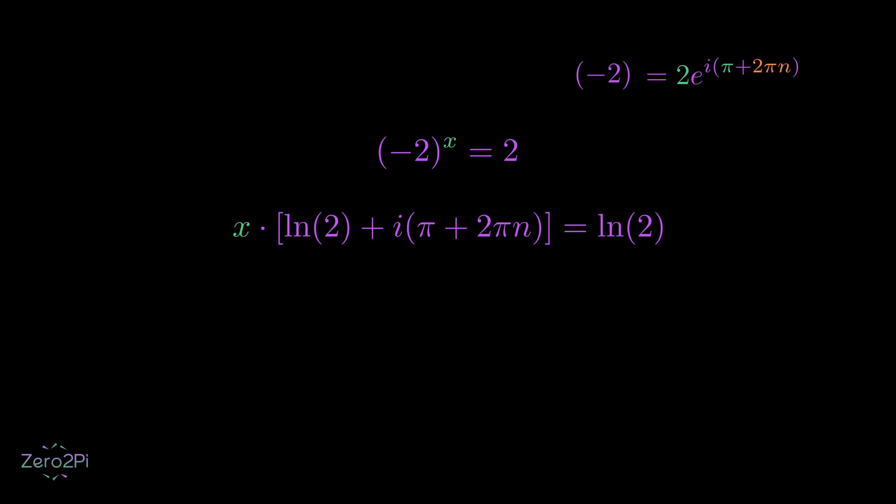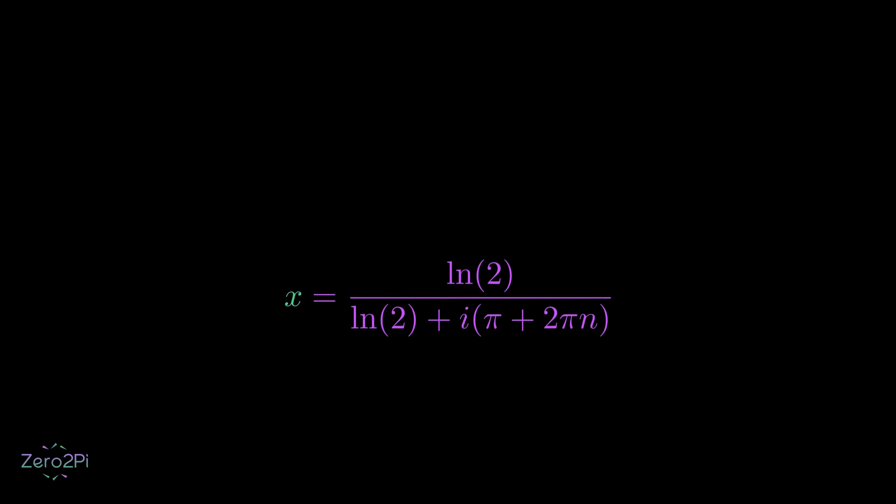To solve for x, I divide both sides by that whole expression. So, x equals the natural log of 2 divided by the natural log of 2 plus i times (pi plus 2 pi n).